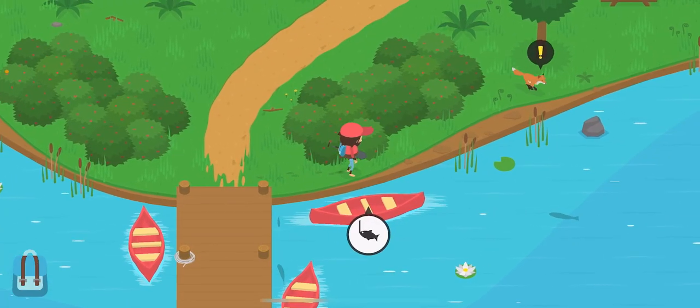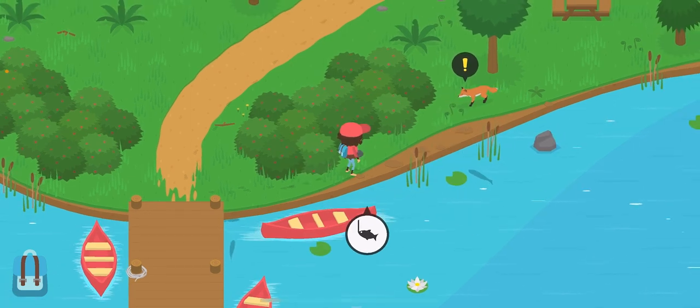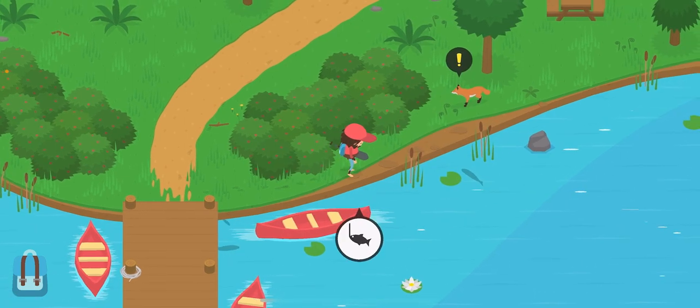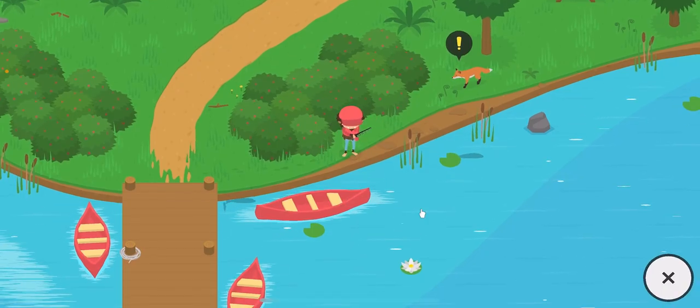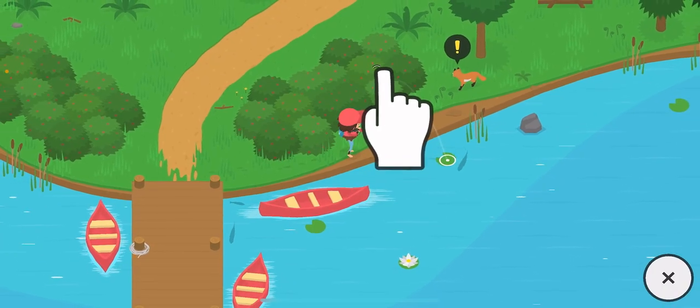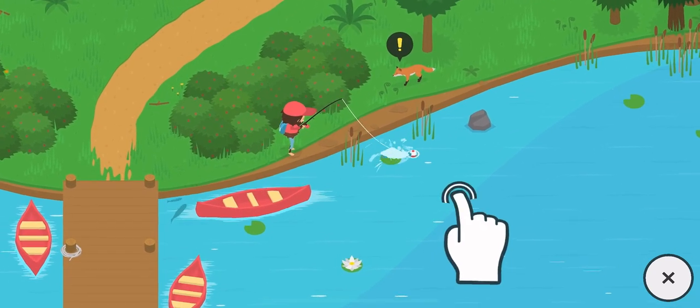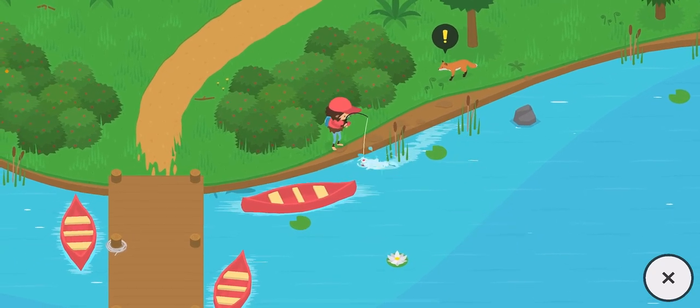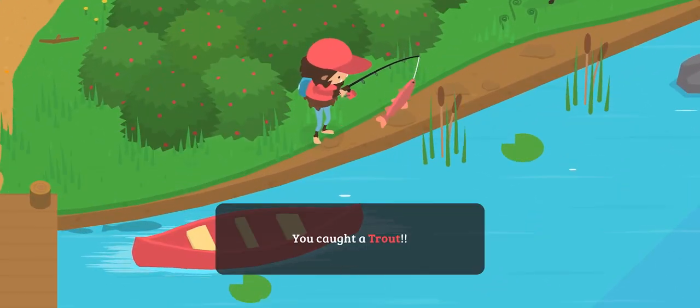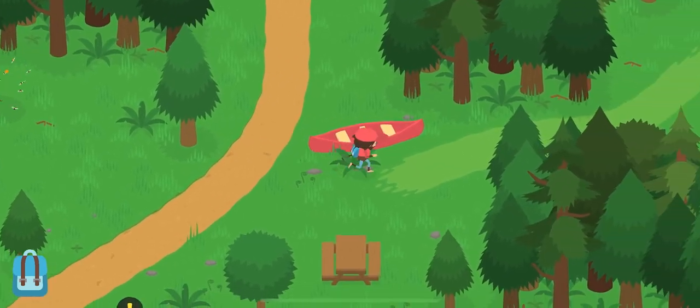After you reach the lake you should see some of these things that are called fish. You should see a few of them at the surface and when you get close to the water you should see this icon. Go ahead and tap on it. What you're going to do is follow the instructions by pulling back and catch one of the fish nearby.